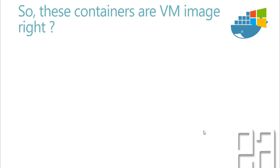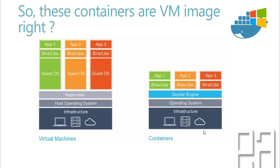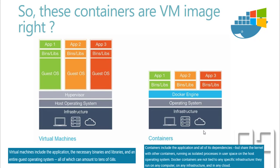So are these containers VM images? Yes, but there is more abstraction than virtual machines. Virtual machines include the application, the necessary binaries and libraries, and an entire guest operating system, all of which can amount to tens of GBs. Whereas containers include the application and all its dependencies but share the kernel with other containers, running as an isolated process in user space on the host OS. Docker containers are not tied to any specific infrastructure — they run on any computer, any infrastructure, and any cloud. That's the power of the container.